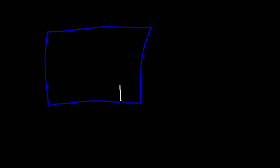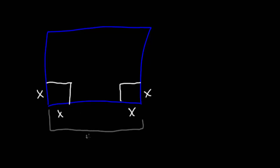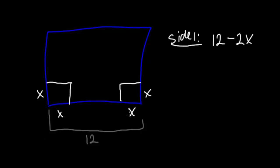Let's start with the equation we can use. We're talking about these little squares that we cut out, and we know the height is x. The total length of one side, if you remember, is 12. So we can rewrite that whole side as 12 minus 2x — because this is 12, and we cut out x on each end. In a similar fashion, the other side will also be 12 minus 2x because we're using a square. So side 1 is 12 minus 2x and side 2 is also 12 minus 2x.